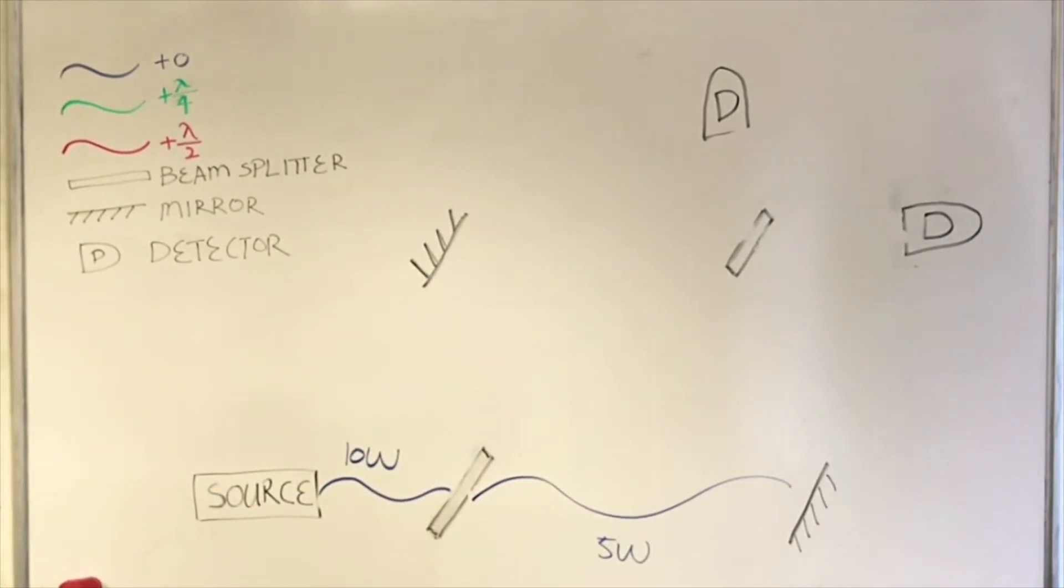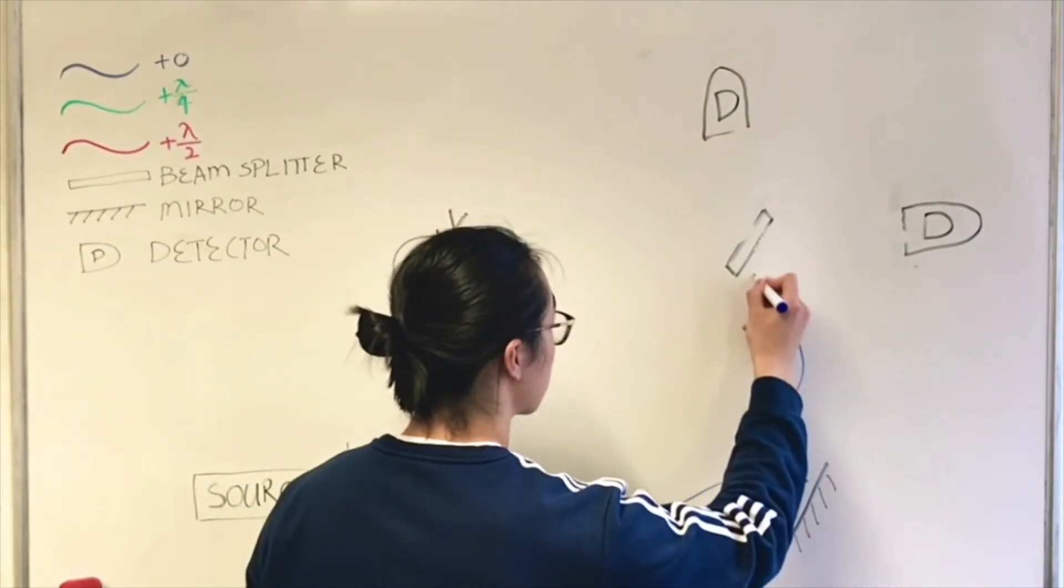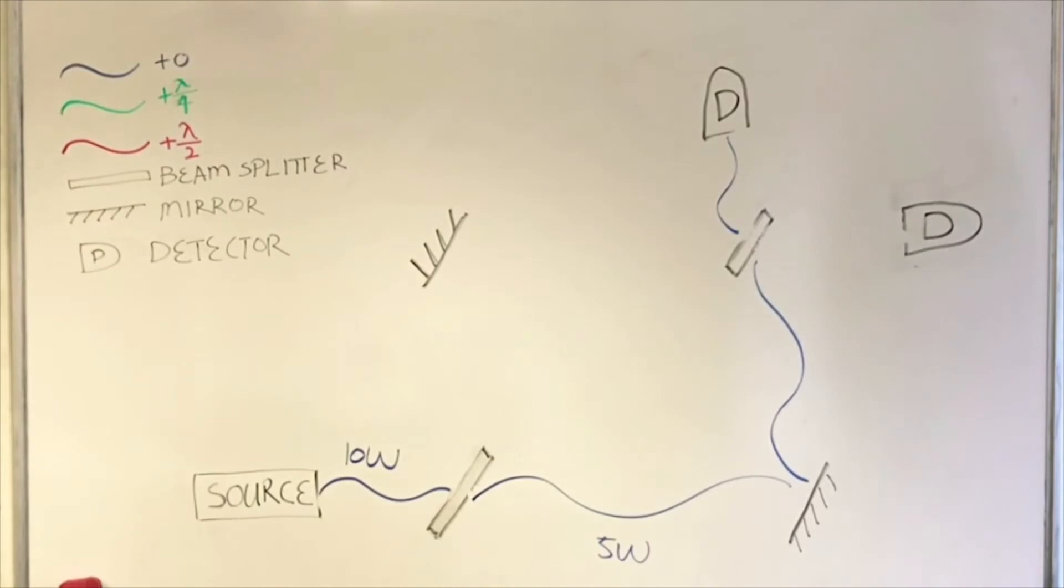The wave that was transmitted through the beam splitter has no phase shift. It hits a mirror and changes direction. Mirrors do not introduce any phase shift. The wave keeps going until it hits the last beam splitter on the top right. It will be transmitted by the beam splitter. Therefore, no phase shift is introduced.